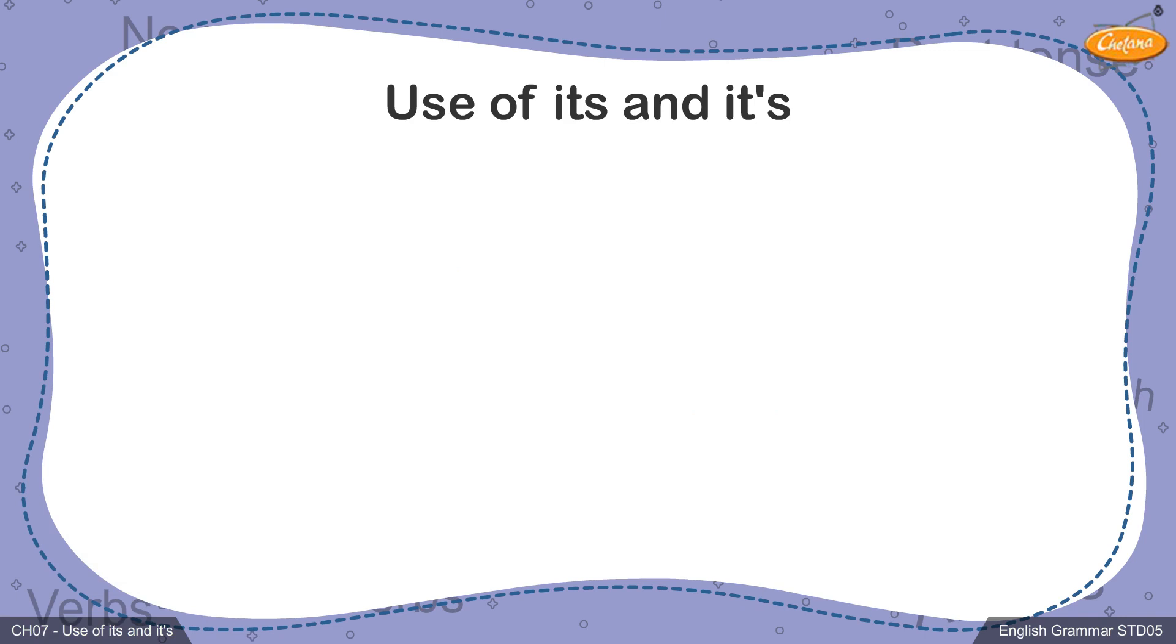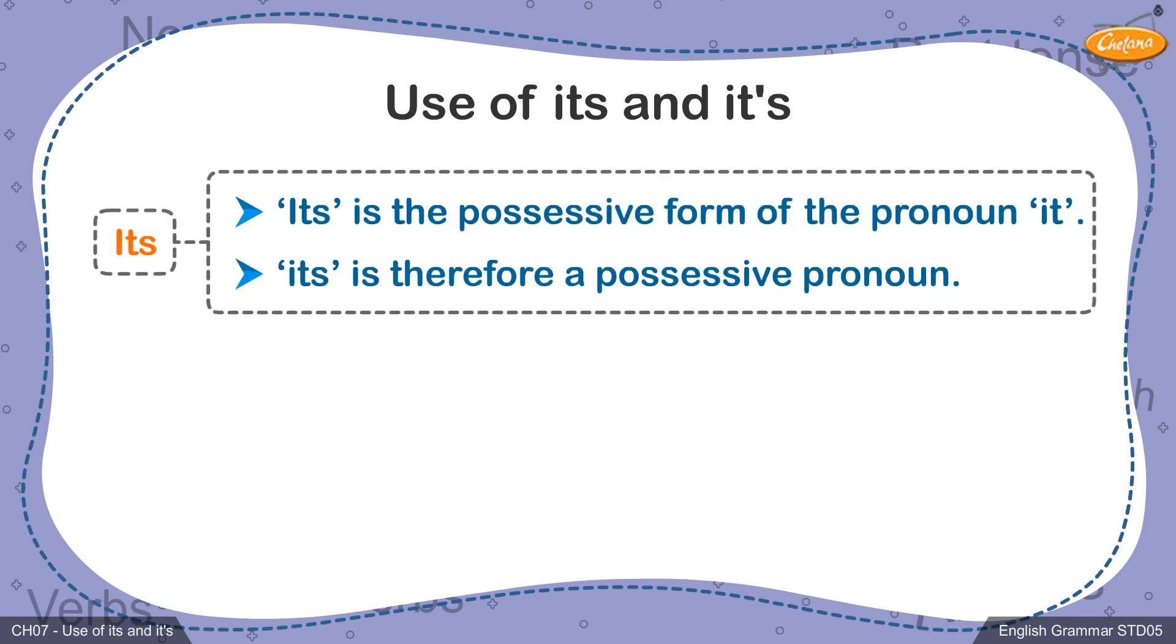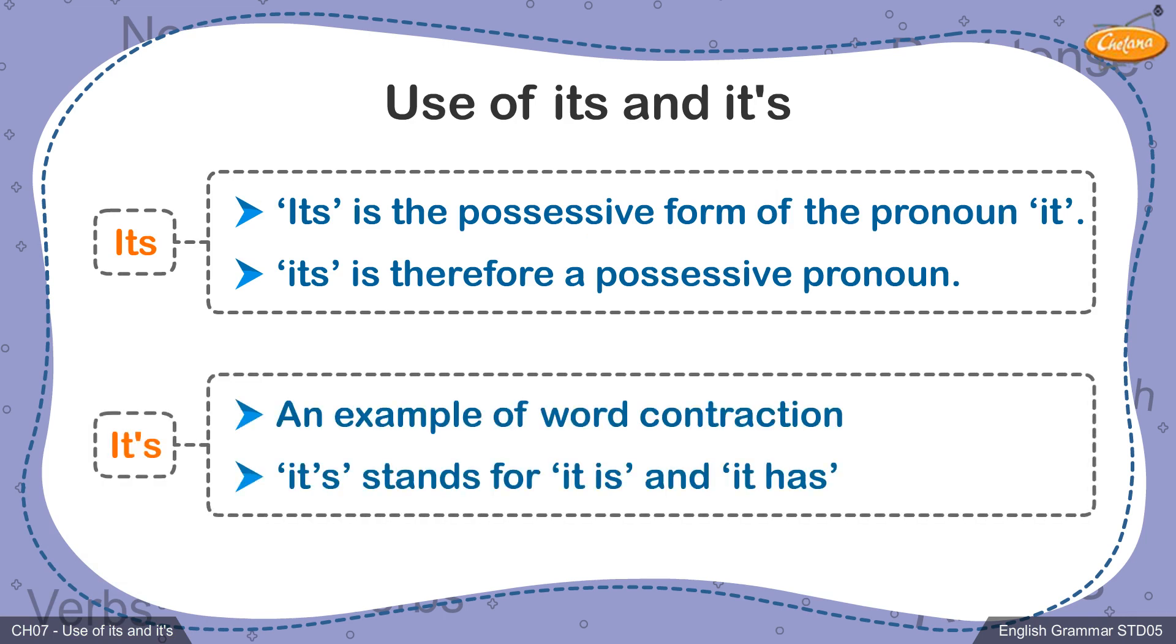Students, now you know the word its is a possessive pronoun and is used with neuter gender nouns, whereas the word it's with an apostrophe is an example of word contraction, which stands for it is or it has. You can correctly use these two words and solve the exercises related to this topic in your workbook.